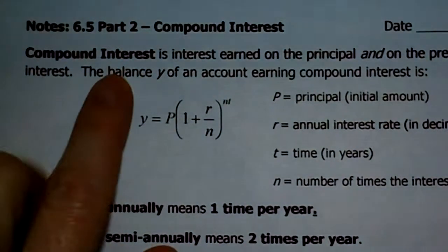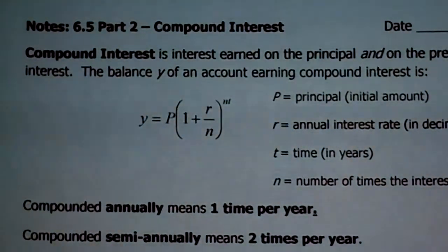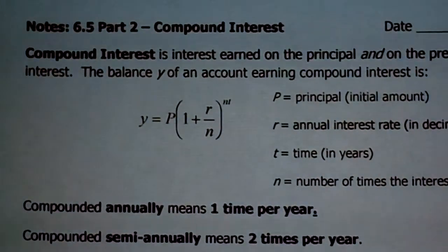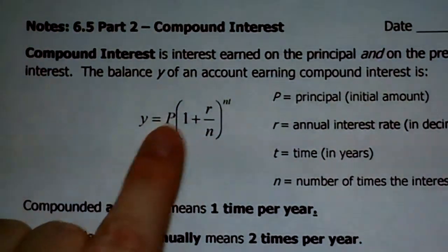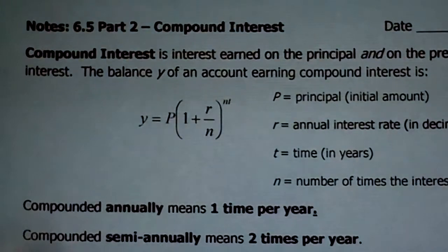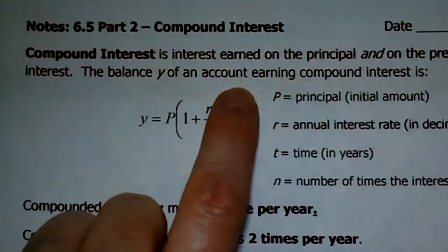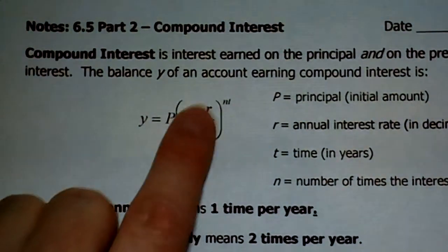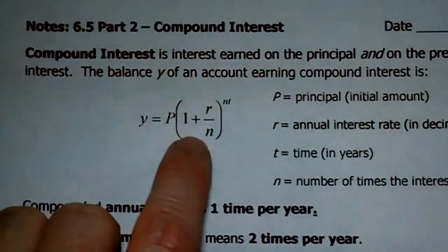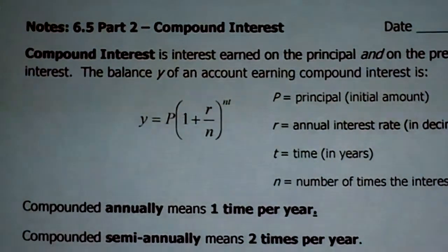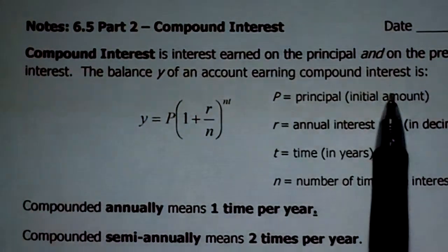What is compound interest? It's interest earned on the principal or starting amount and on the previously earned interest. The balance Y of an account earning compound interest is. So this is yet another equation. But it's still, I hope you notice, in Y equals A times B to the X power. This is still an exponential form. It's just how you get the factor is a little different.